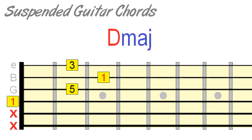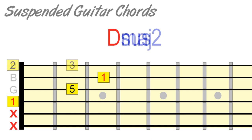Suspended second chords can be formed by flattening the third of major chord shapes by a whole step.